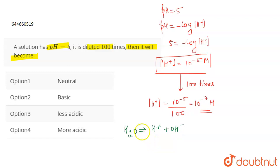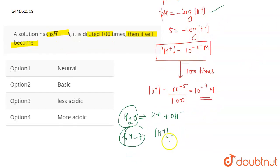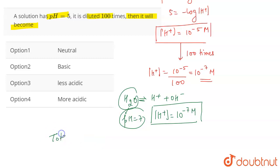If we talk about water, water dissociates to give H⁺ and OH⁻. The pH of water is equal to 7, so using pH = -log[H⁺], when pH = 7, the concentration of H⁺ from water is 10⁻⁷ molar.